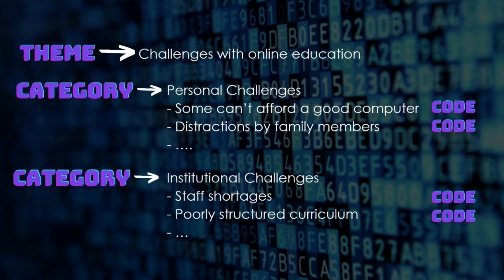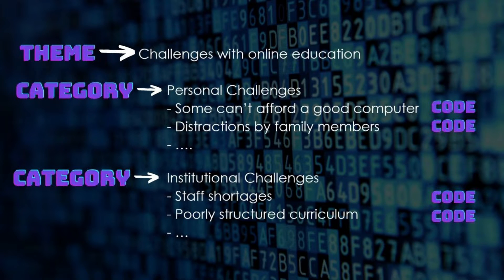Sometimes this does happen at the stage of talking about the findings, in which case it's relatively straightforward. If you have your main theme — let's say 'challenges that students face in online education' — then underneath you would have categories, such as personal challenges and institutional challenges. And then underneath you would list these challenges in the form of codes. So personal challenges would be, for example, financial challenges or personal characteristics, and institutional challenges would be things like a shortage of teachers.